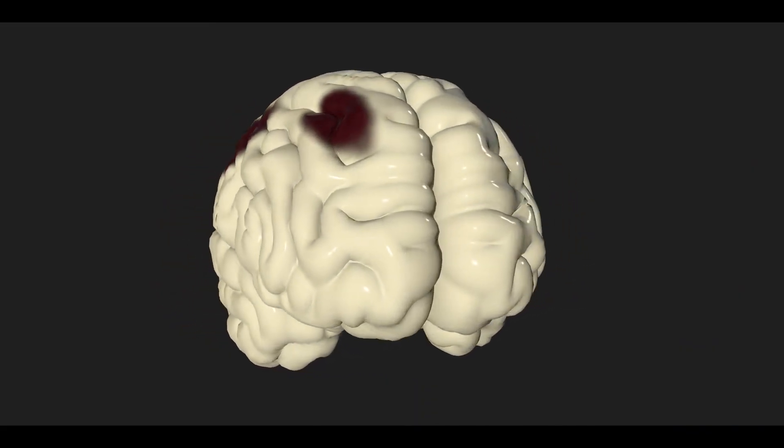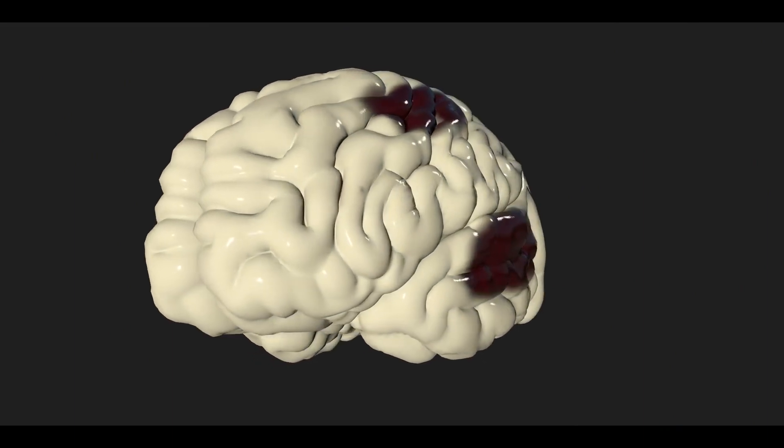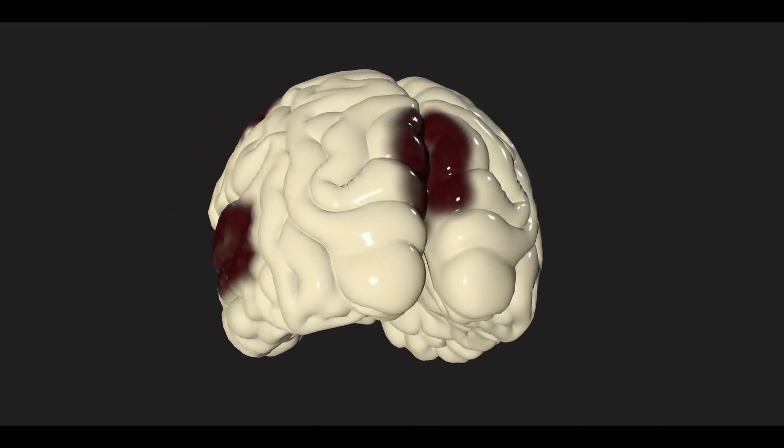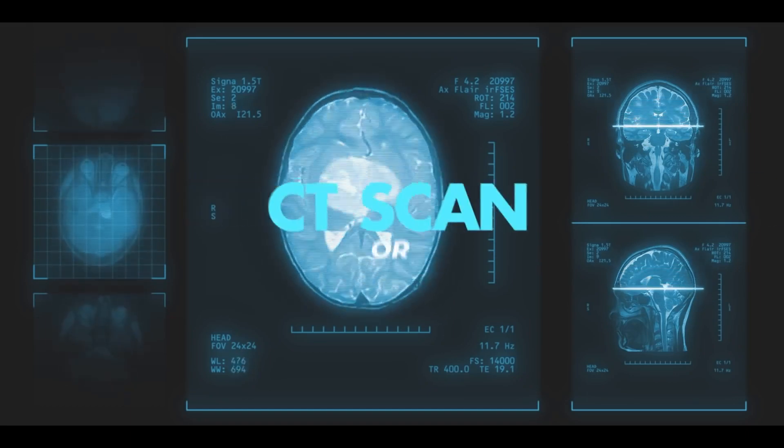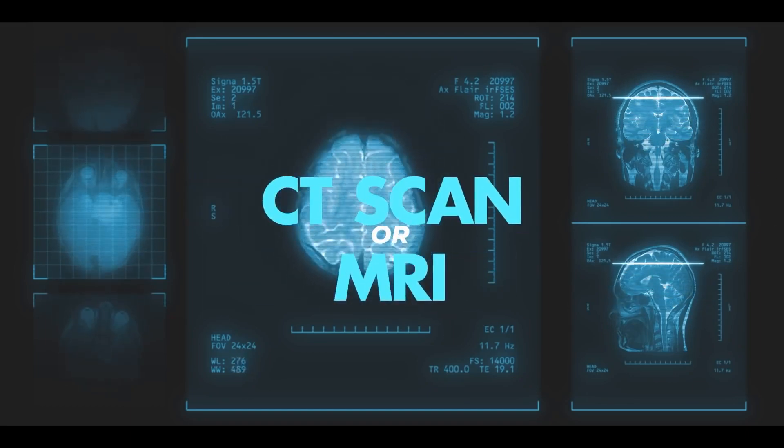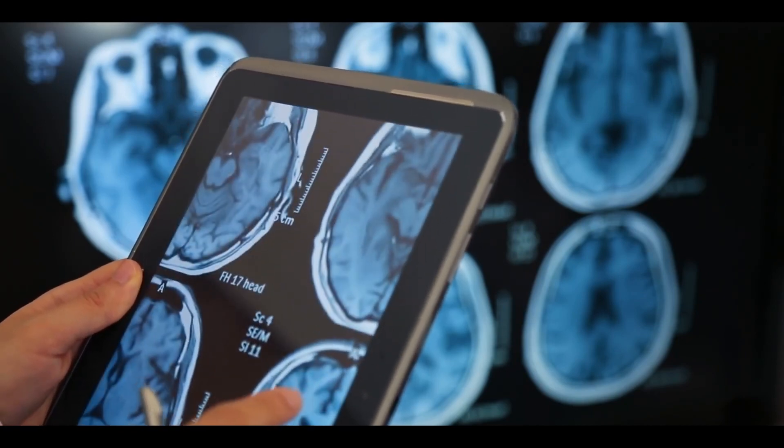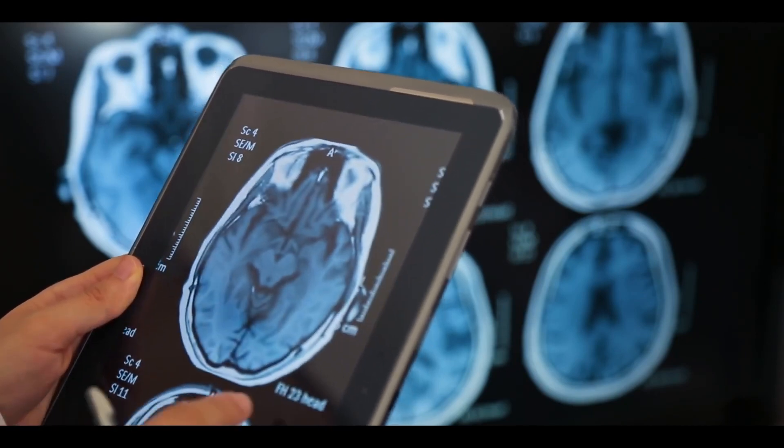For treatment of brain hemorrhage, it is necessary to determine the location of brain hemorrhage in brain and how much damage occurred to the brain, for which doctors order CT scan and MRI. The treatment is started once the location of bleeding and damage by it is identified in the brain.